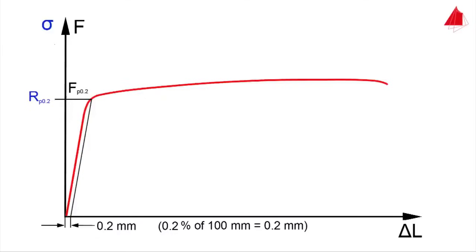The 0.2 percent proof strength Rp0.2 is equal to Fp0.2 divided by the original cross-sectional area S0. Tensile strength, percentage elongation after fracture, and percentage reduction of area are calculated in the same way as in the first test.